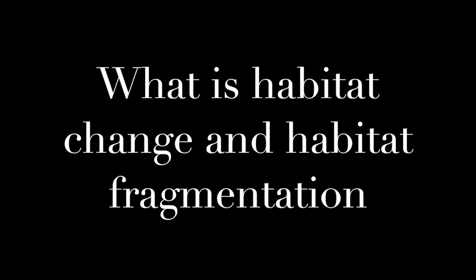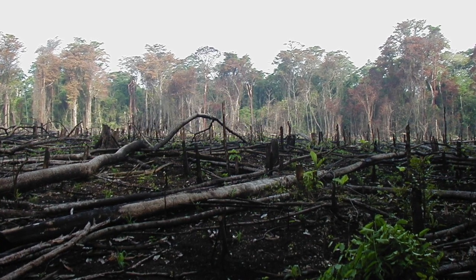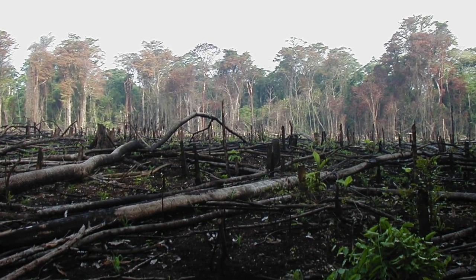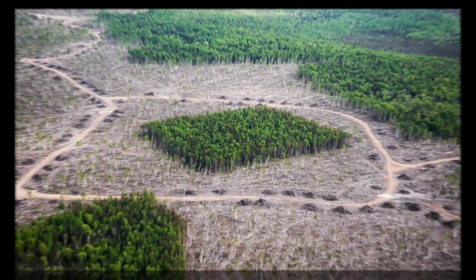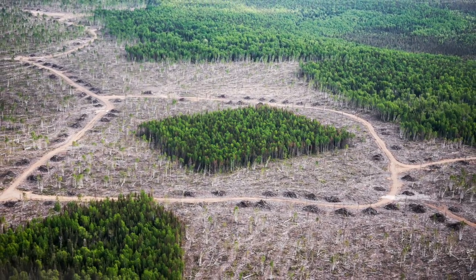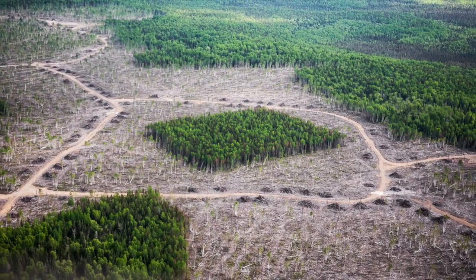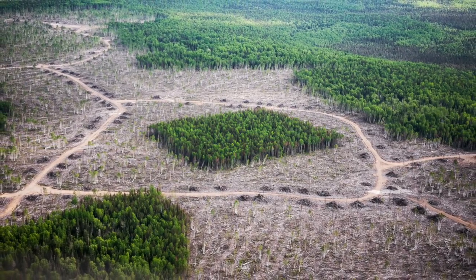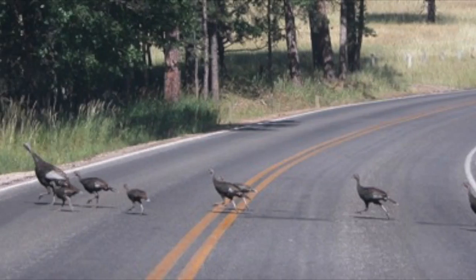What is habitat change and habitat fragmentation? Habitat change is the process by which humans alter a habitat enough so that the species can no longer live there. Habitat fragmentation is when we alter small areas within a larger area bit by bit. This leads to passages of habitats separated by urban development, roads, agriculture and much more.